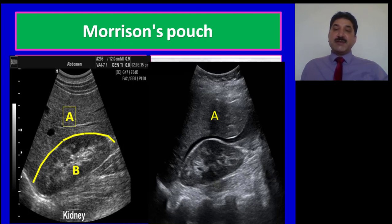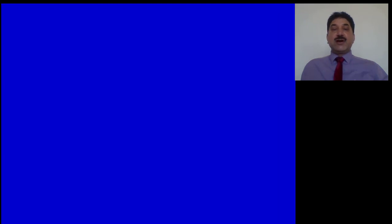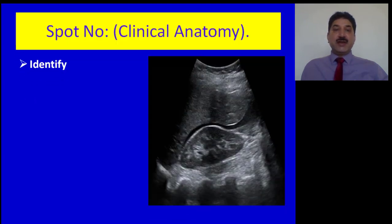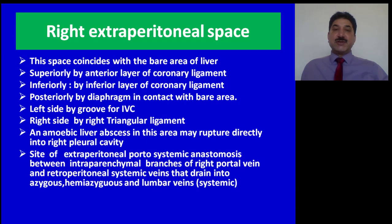As shown in this diagram: A represents the right lobe of the liver, B represents the right kidney, and C represents the hepatorenal pouch — Morrison's pouch. In the quiz image: A is the right lobe of the liver, B is the right kidney, and C is fluid in Morrison's pouch.